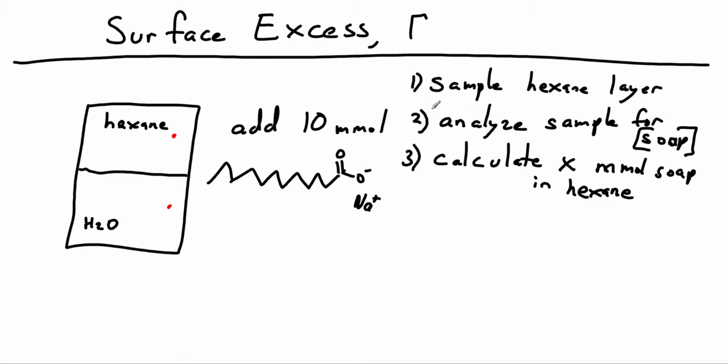And then we use the volume of hexane to figure out the total amount of soap in the hexane. Now just to be clear, we sample this hexane. Maybe we pull out a tiny little sample. Maybe this is a liter and we pull out one mil. We analyze that mil, see what the concentration of soap is in that mil, multiply by this volume. And that's how we get how many millimoles of soap are in the hexane.